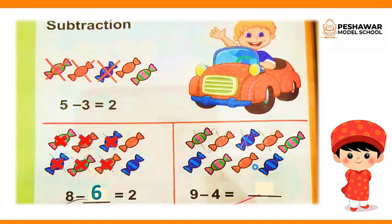Next, we have 9 candies. Count the candies — we have 9 candies. We cut 4 from it: 1, 2, 3, 4. And the rest are 1, 2, 3, 4, 5. We get 5 candies. 9 minus 4, we get 5. 9 minus 4 is equal to 5.